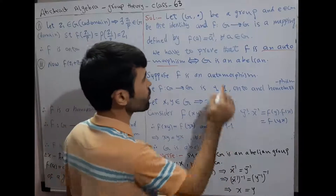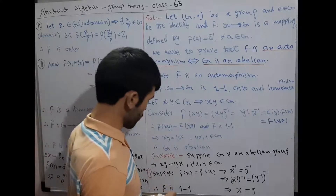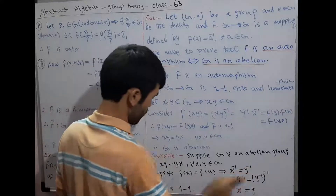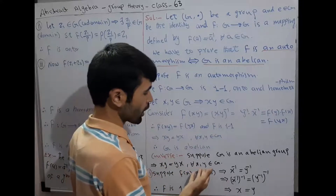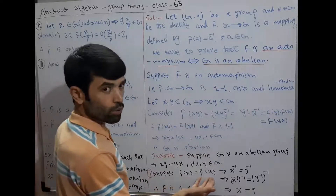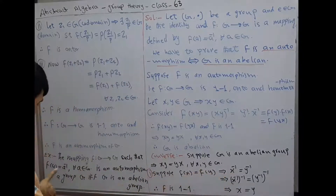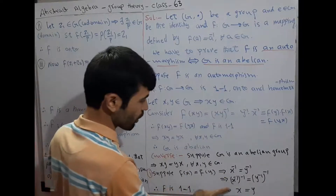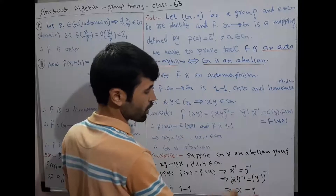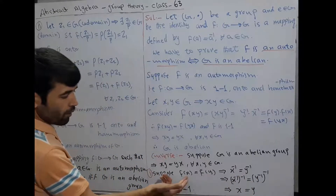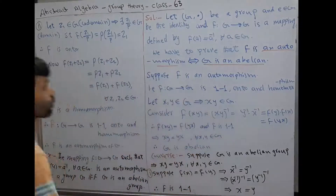Converse of the theorem: we now assume G is an abelian group and want to prove that F is an automorphism. Suppose G is abelian, so x·y = y·x for all x, y in G. Suppose F(x) = F(y), which implies x⁻¹ = y⁻¹, and therefore x = y. Thus, from F(x) = F(y) we get x = y. Therefore, F is one-one.